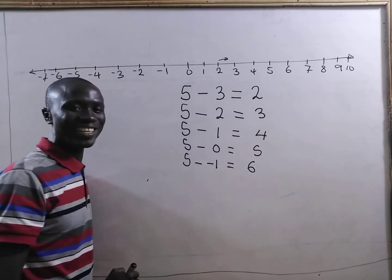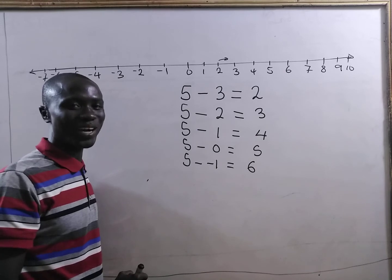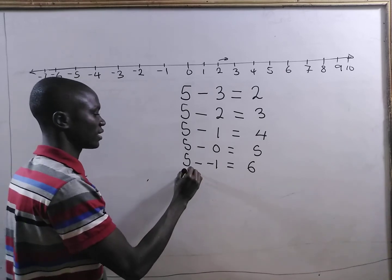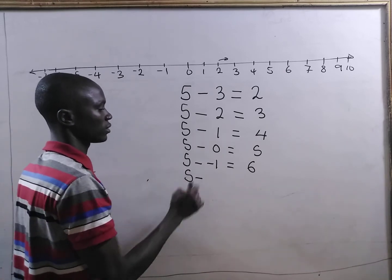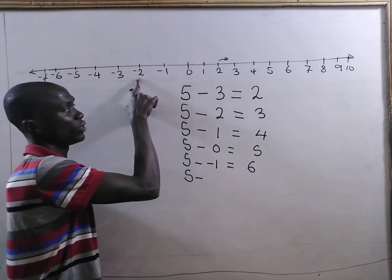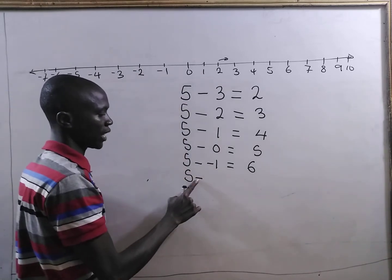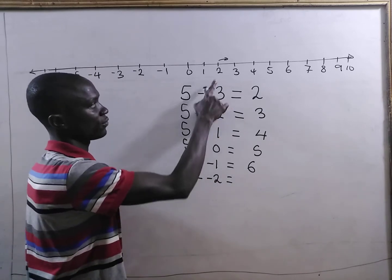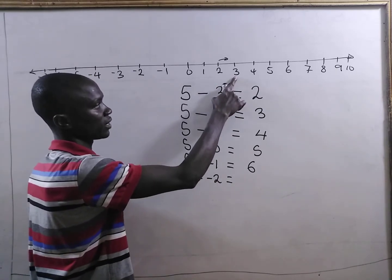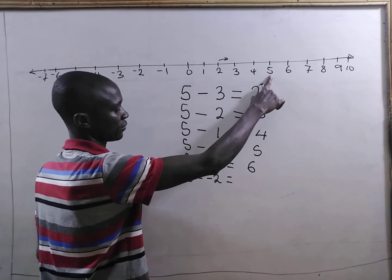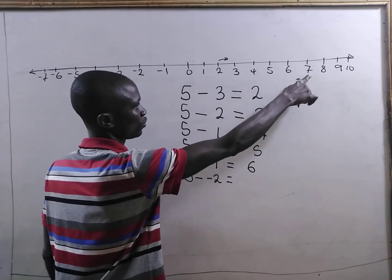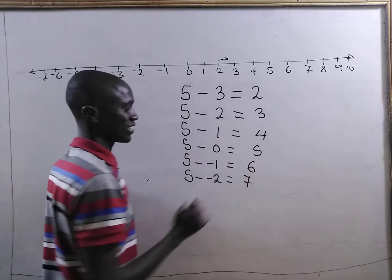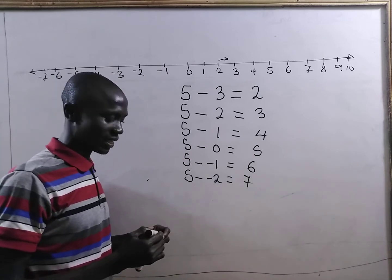Very simple as that. If I take 5 minus negative 1, I move to positive 6. If I move from negative 1 to negative 2, so 5 minus negative 2, I have 2, 3, 4, 5, 6. Then, I move to positive 7. Very simple as that.